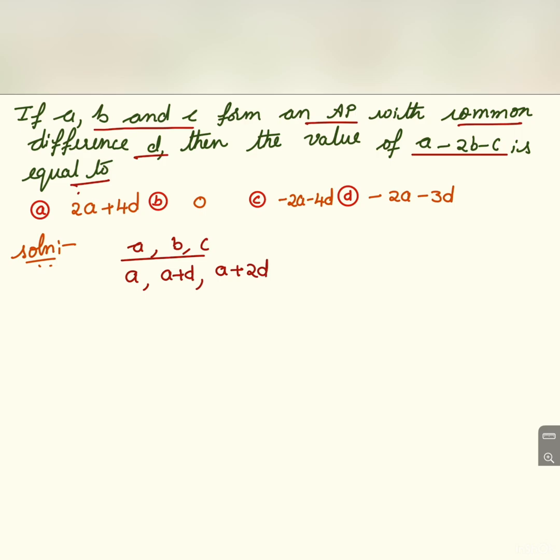Now we have to find out A minus 2B minus C. That will be equal to A minus 2 into B is A plus D, and C is A plus 2D.